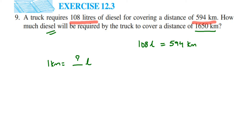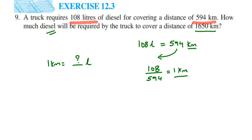From the equation we understand which number we should divide with what. Kilometre is given, so you transpose that number to the other side. This becomes 108 divided by 594 equals litres per 1 kilometre. Whatever answer you get, that much litres is required for covering 1 kilometre. Once we know for 1 kilometre, we can find out for 1650 — we just have to multiply. Whenever you see this type of question, equate them and you will get the answer.